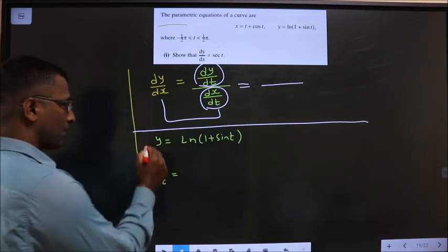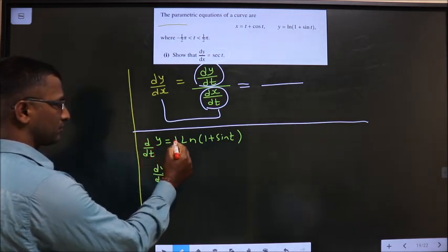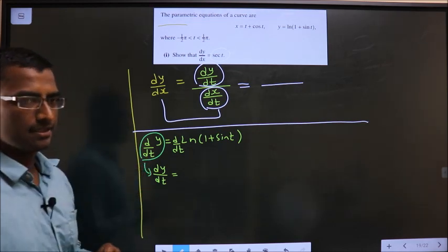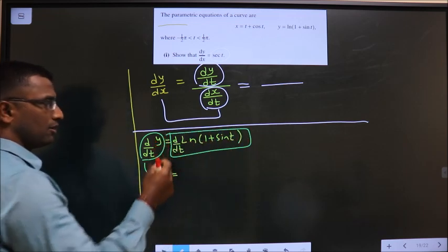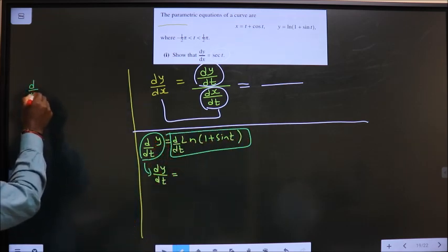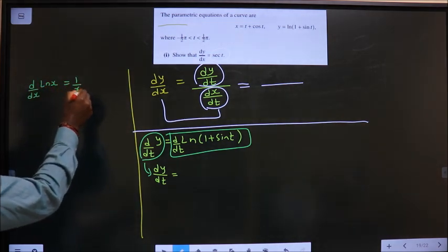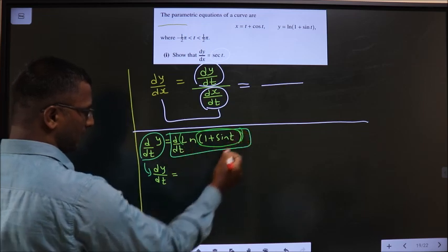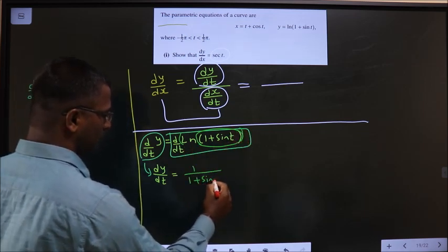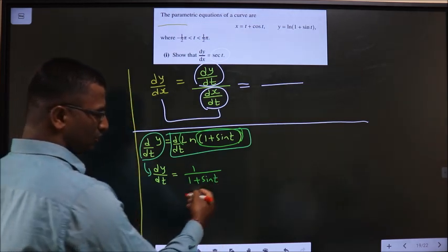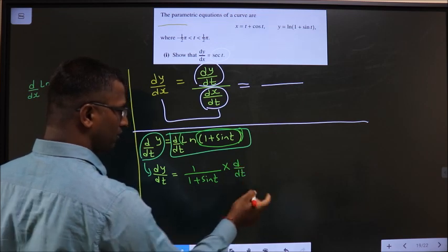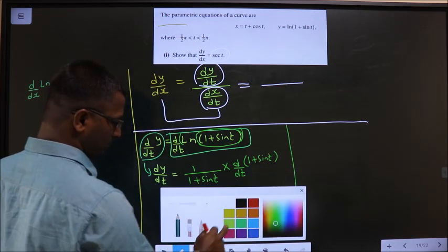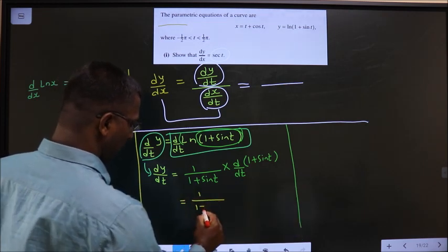To get dy by dt you have to differentiate on both sides. What do I mean is take d by dt on both sides. So here dy by dt no change, write as it is. And here what formula will you apply is d by dx of ln x is 1 by x. Now here in place of x you have 1 plus sin t. So this will become 1 by 1 plus sin t.